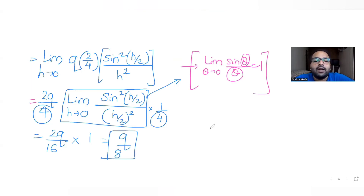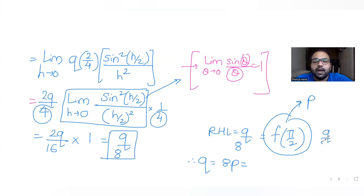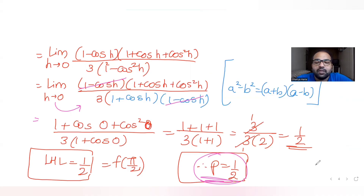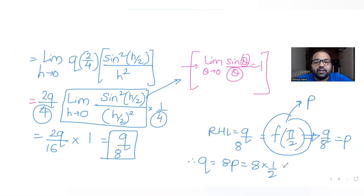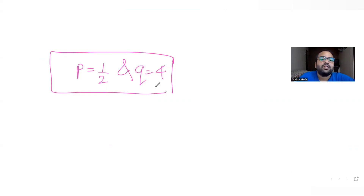The right-hand limit is q/8, and this equals f(π/2) = p = 1/2. So q/8 = 1/2, giving q = 8p = 8 × (1/2) = 4. Therefore p = 1/2 and q = 4.